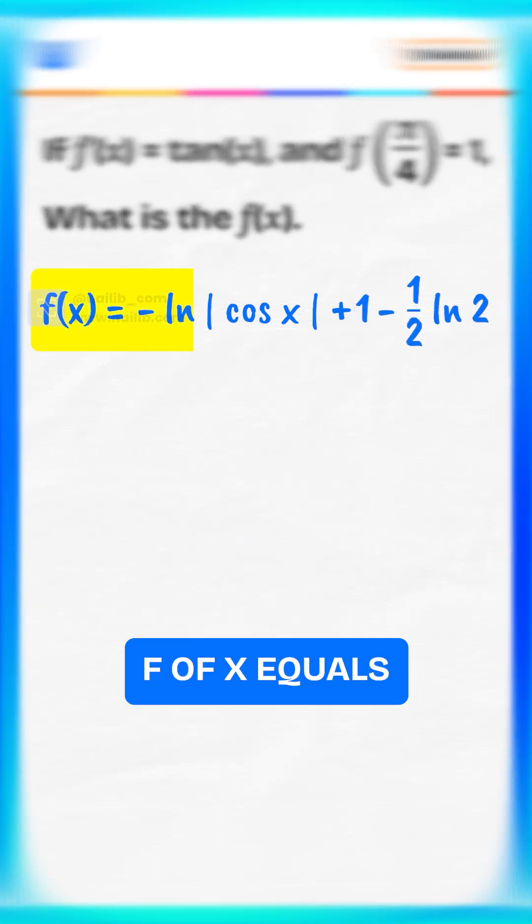Hence, f of x equals negative log of cosine x plus 1 minus 1 half log 2.